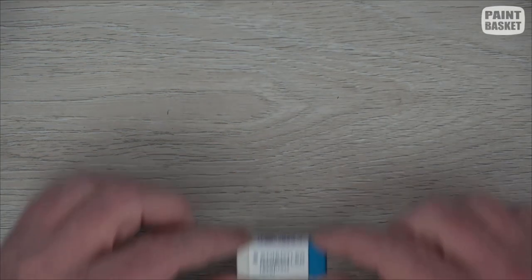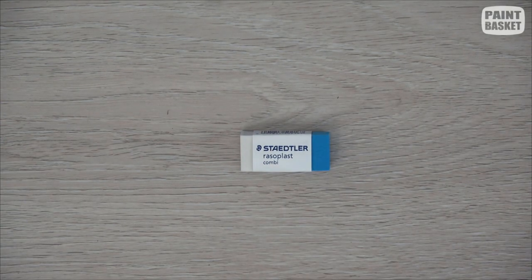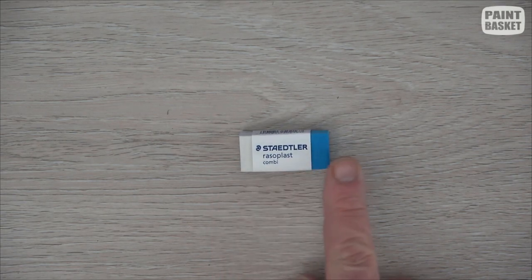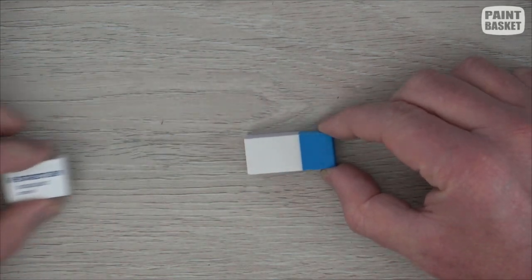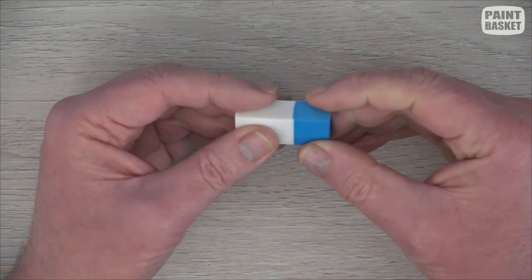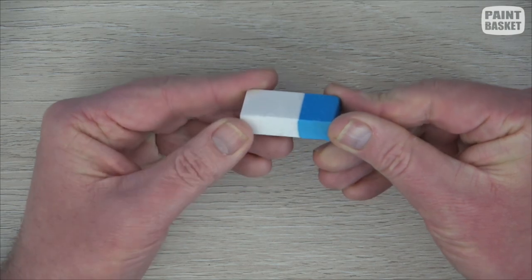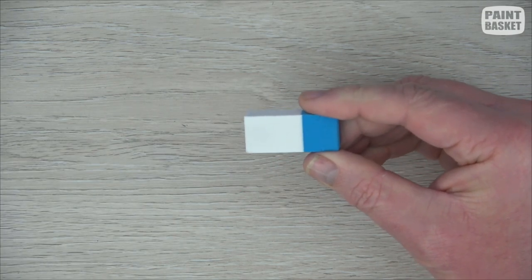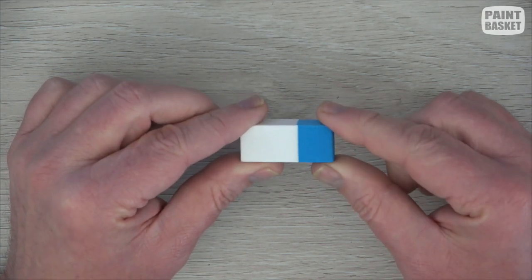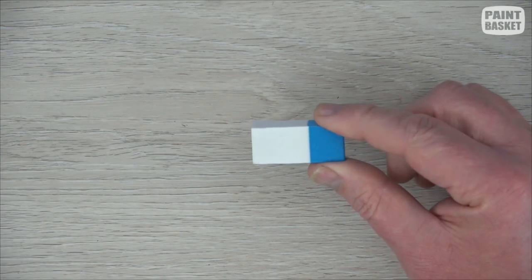The next eraser I want to show you is a combination eraser. So you get them with different types of erasers on each side. This one over here, the Rasterplast is a standard vinyl eraser on this side, and it's got an ink or a colored pencil eraser on that side over there. So this is a nice soft and this is a lot harder. So that's really handy for the colored pencil guys. Because you can erase gently with this, or if you need to erase back a lot further, then you can use that side over there.